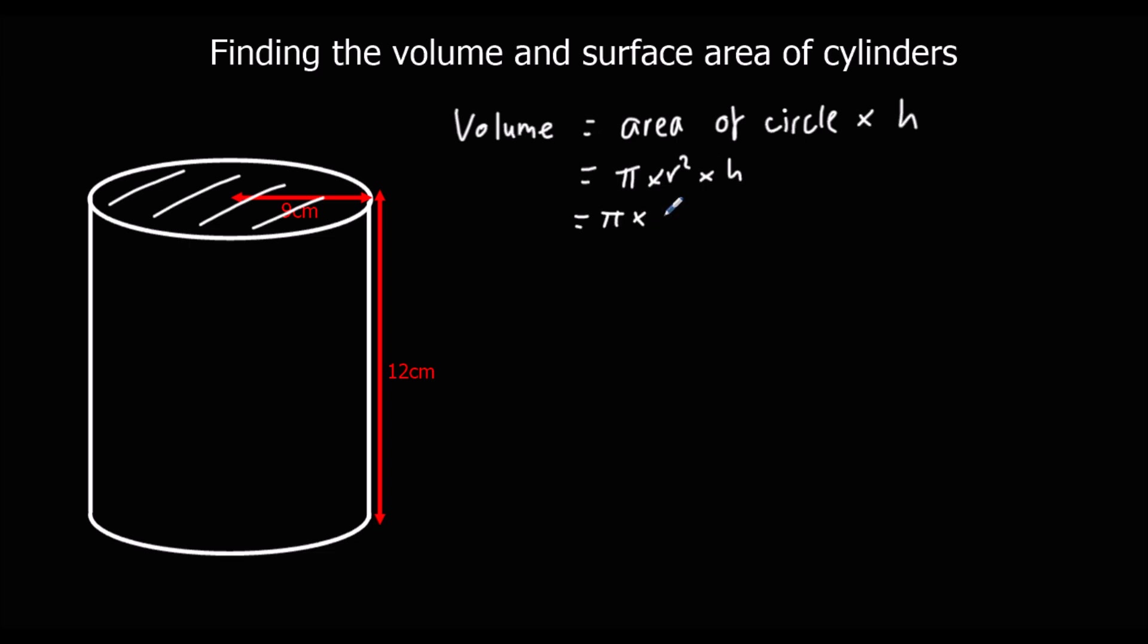In this case we've got pi times 9 squared times 12. So we can type that in the calculator and that will give us 972 pi cm cubed, or we could write that as a decimal which would be 3053.6 cm cubed to one decimal place.